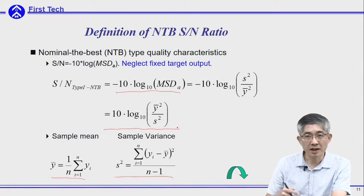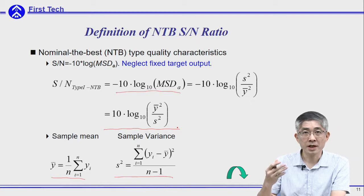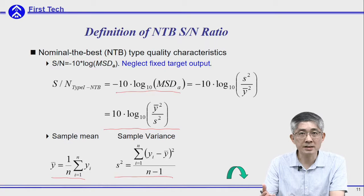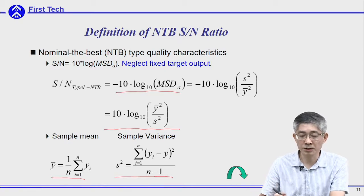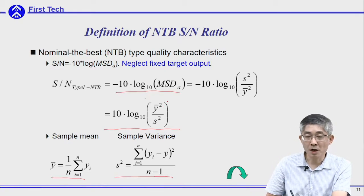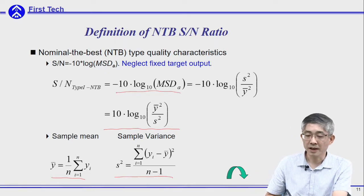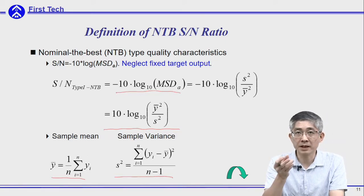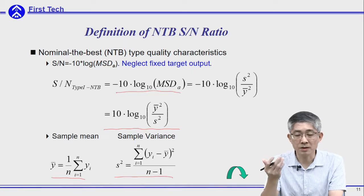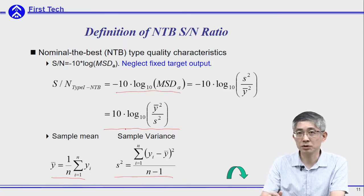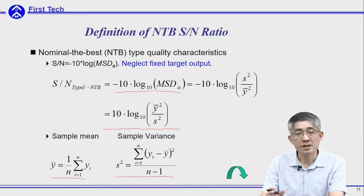By looking at this equation, you can understand why Taguchi advocated that his average quality loss is very similar to the concept of signal-to-noise ratio, since ȳ is similar to the signal in communications and s² is the noise — the unexpected output — as well. This equation is similar to the conventional SN ratio used in the communication system.